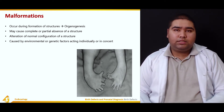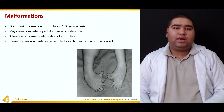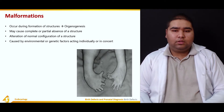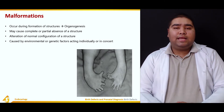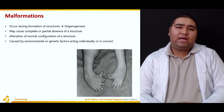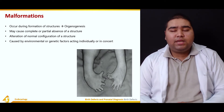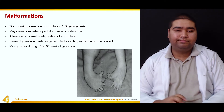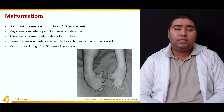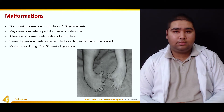Malformations are caused by environmental or genetic factors that may act individually or in concert. If a single teratogenic factor is acting, the chances of malformation are singular; however, they multiply exponentially if multiple factors are acting at the same time. Malformations mostly occur during the third to eighth week of gestation — the period of organogenesis.